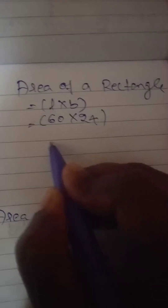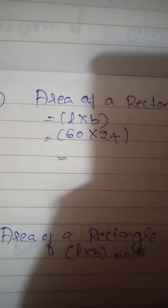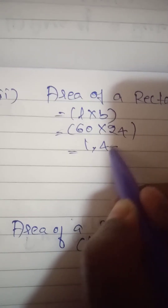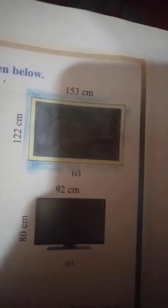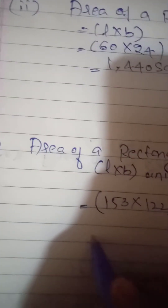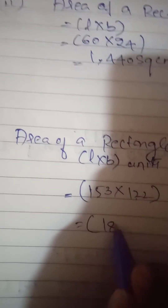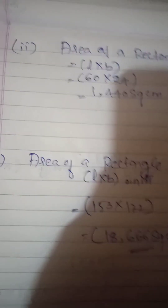Next: length is 60 centimeters and breadth is 24 centimeters. Area of rectangle equals 60 into 24 equals 1,440 square centimeters. Next: length is 153 centimeters and breadth is 122 centimeters. Area equals 153 into 122 equals 18,666 square centimeters.